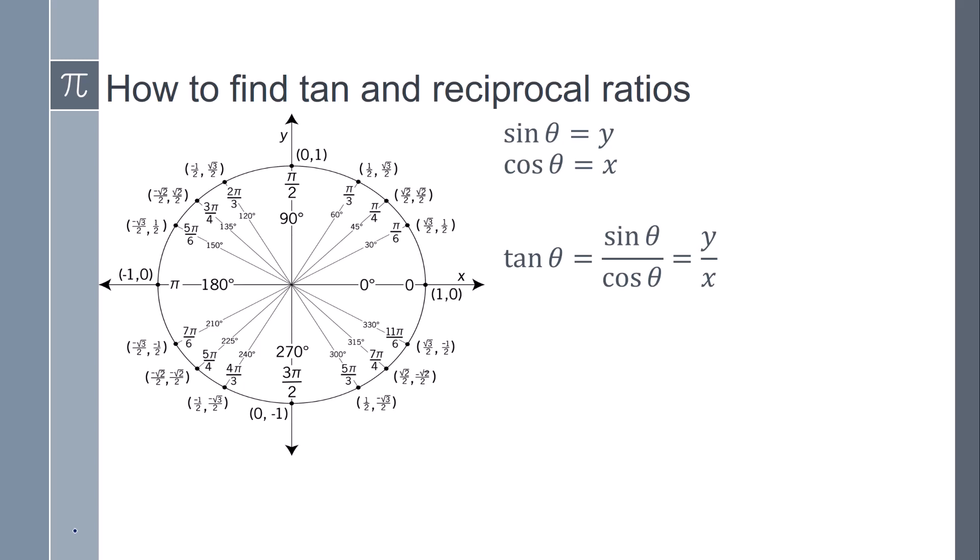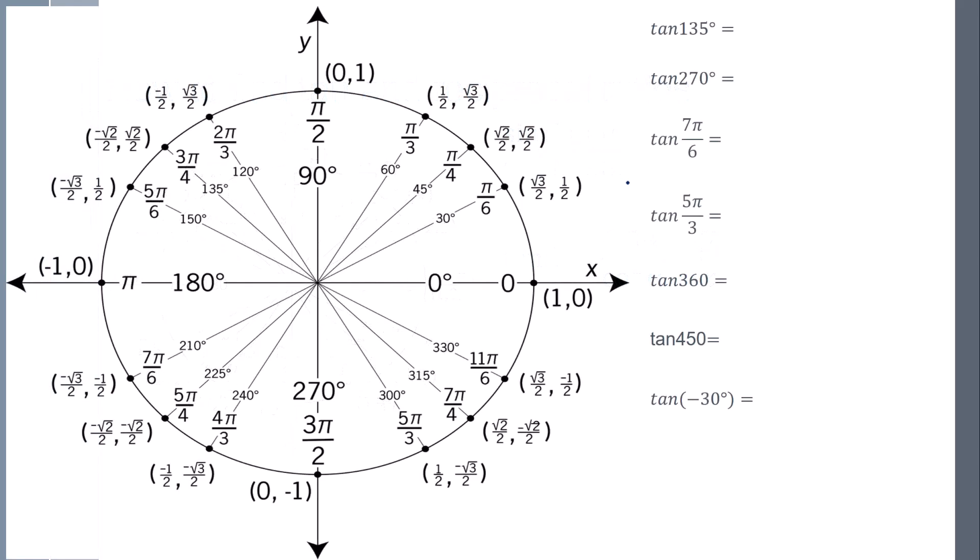So how do we find tangent? We know that sine is y and cosine of theta is x. Well, tangent is sine of theta over cosine theta, which is the same as y over x. So tangent just means I need to do y over x, and this tells me how much it rotates.